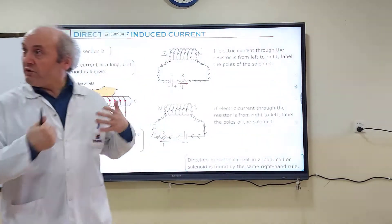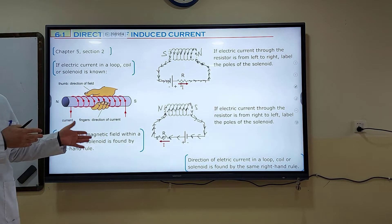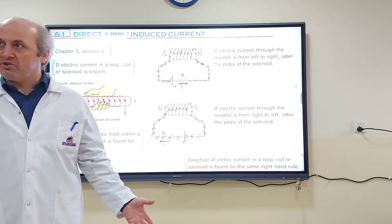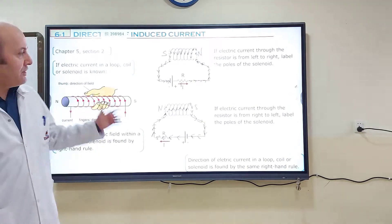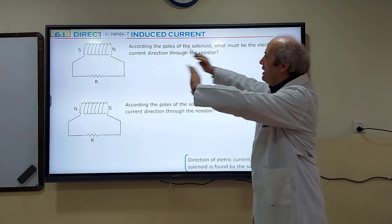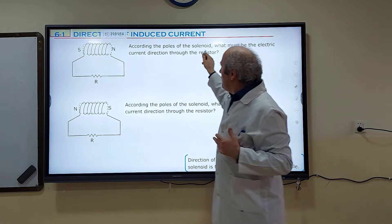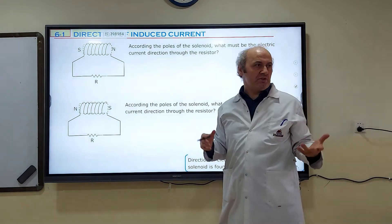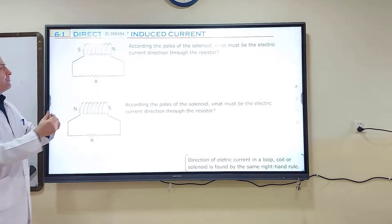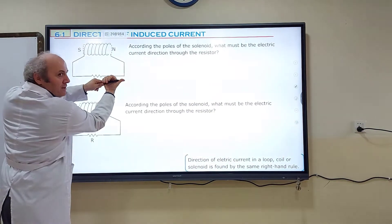If electric currents are given, we can find the poles. We did this in Chapter 5 Section 3. But right now, poles are given — can we find the electric current direction? We can. Assume the poles of the solenoid are given to you. According to the poles, what must be the electric current direction through the resistor? This side is N pole, this side is S pole. Use your right hand — thumb points toward the N pole.